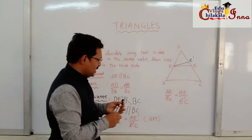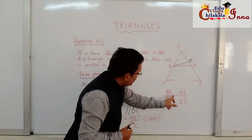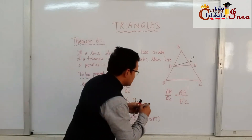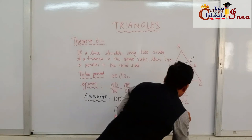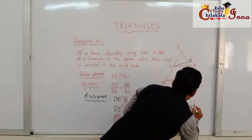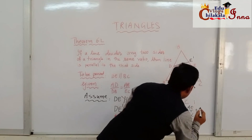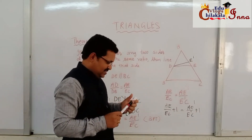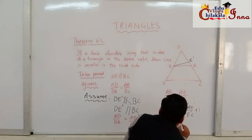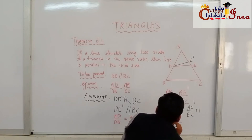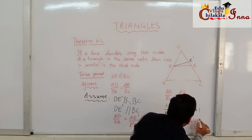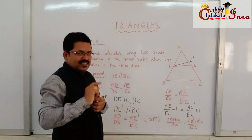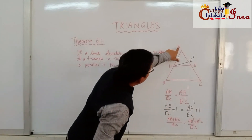Now let me add 1 to both sides: AE/EC + 1 = AE'/E'C + 1. Taking the LCM on both sides: (AE + EC)/EC = (AE' + E'C)/E'C.